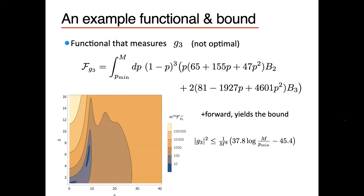As an example of the functionals we consider: we take sum rules, multiply by a polynomial in P, integrate up to the UV cutoff (which is valid because sum rules only receive contributions from a finite number of Wilson coefficients), and together with a forward contribution, get a functional that is positive for any value of mass and spin. We get a bound that looks something like this — there's a little negativity from the IR cutoff, but it's bounded. This gives a non-parametric, order-one coefficient bound on R-cubed with the scaling expected from dimensional analysis.